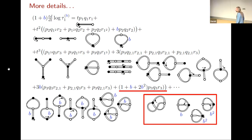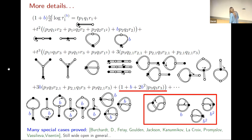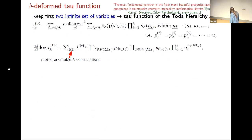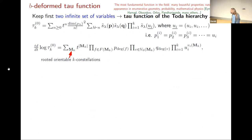Many special cases of the b-conjecture are proved, and there are many papers establishing these, but it remains wide open in full generality. Returning to the classical case — without Jack polynomials, only Schur symmetric functions — if we keep only the first two infinite families of variables and set all remaining p's equal to one variable u, this function turns out to be a very fundamental object in enumerative geometry: a τ function of the Toda hierarchy, important across many areas of mathematics and mathematical physics.